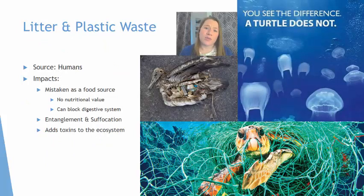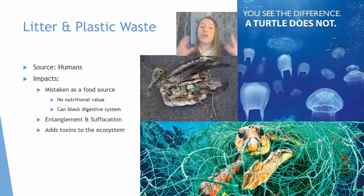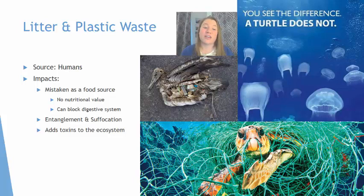Litter and plastic waste also impact aquatic ecosystems. The source of this litter and plastic waste is always from humans — we are the only species on Earth that produce litter or waste. Many species mistake this litter for food, but it has no nutritional value. These species spend energy trying to hunt it down and digest it but get nothing in return. In fact, plastic waste can clog their digestive system. Many species also die because they get tangled in that plastic waste or are suffocated when it gets stuck in their airway passages.